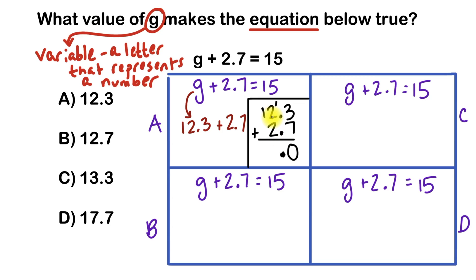Then I've got 2 plus 2, which is 4, and 4 plus 1, which is 5. And 1 plus nothing is just 1. So 15.0 is the same exact thing as 15.